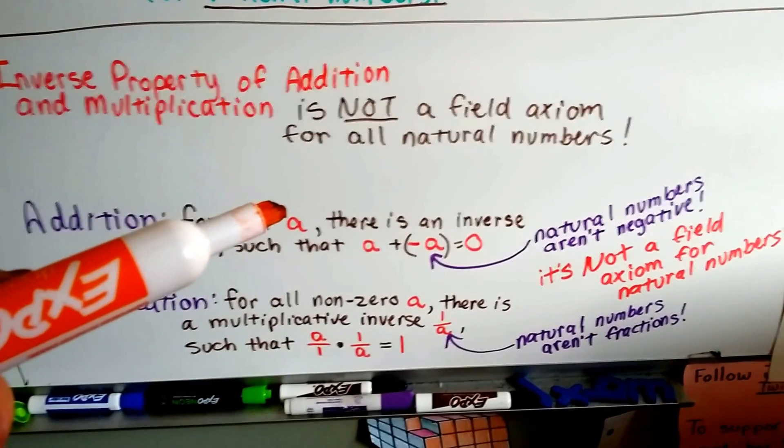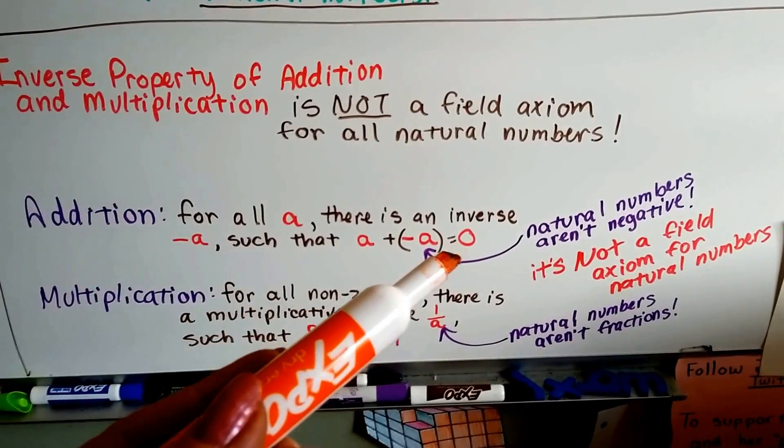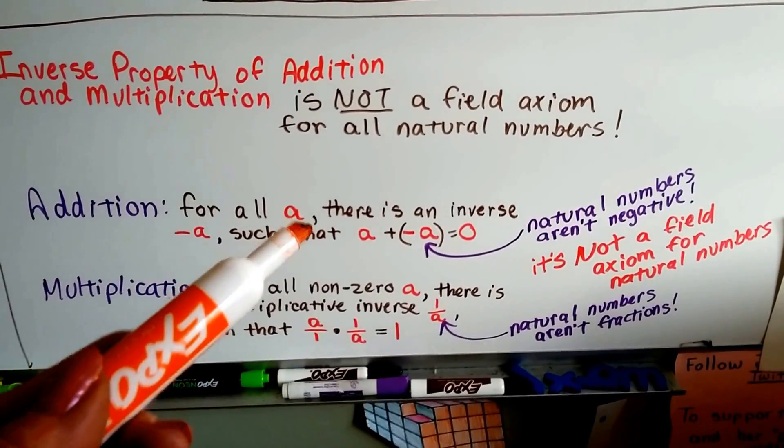For all numbers a, there's an inverse negative a. Oh, that ruined it. Natural numbers aren't negative, so it won't work for natural numbers.